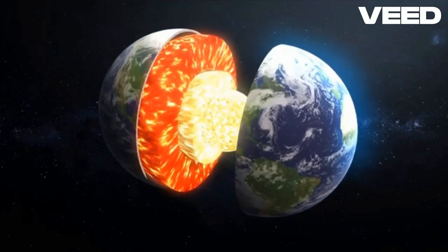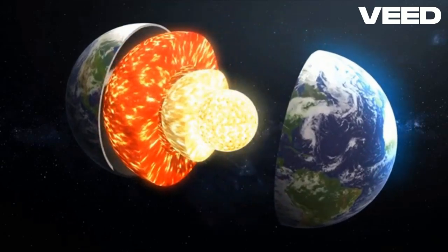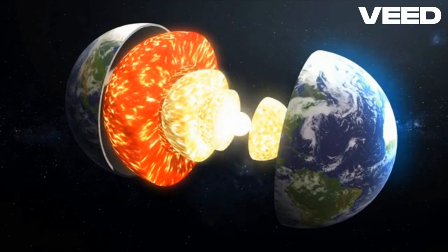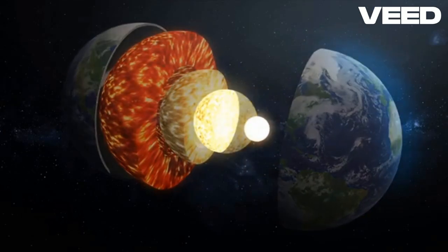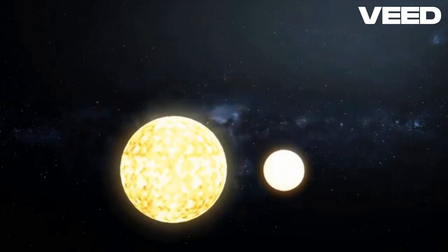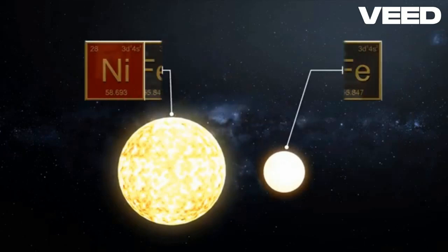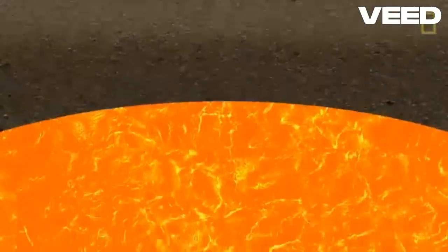The Earth's magnetic field originates from the outer core due to the movement of molten iron and nickel within this layer. The outer core, situated beneath the mantle and surrounding the solid inner core, is composed of liquid metals. As these metals move, driven by convection currents caused by heat escaping from the inner core, they generate electric currents. These currents, in turn, produce magnetic fields.